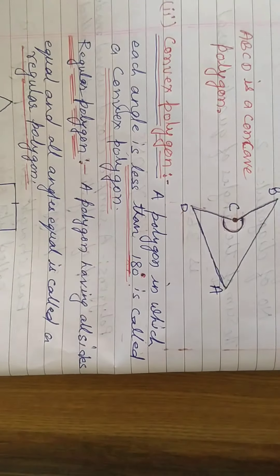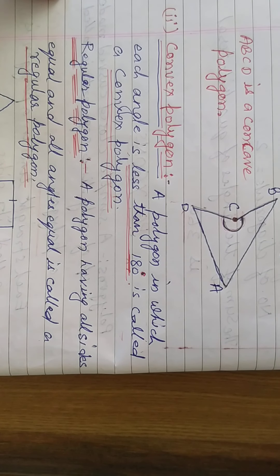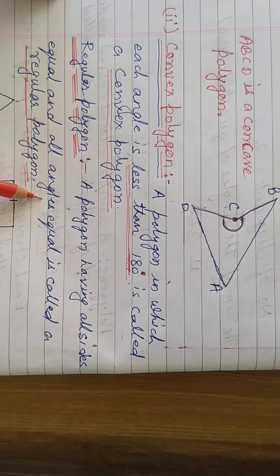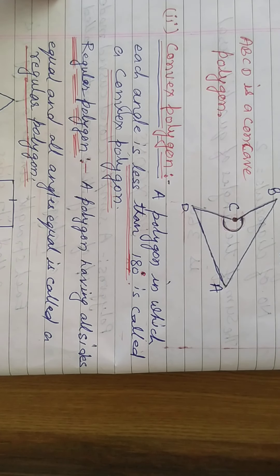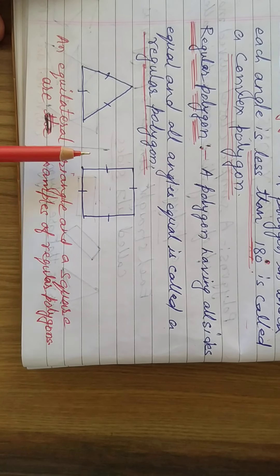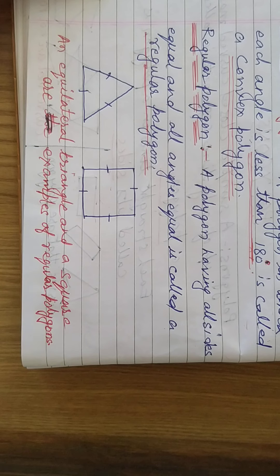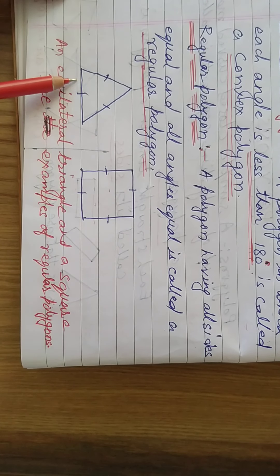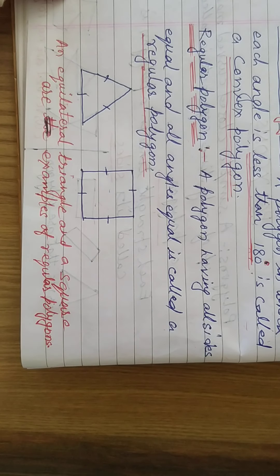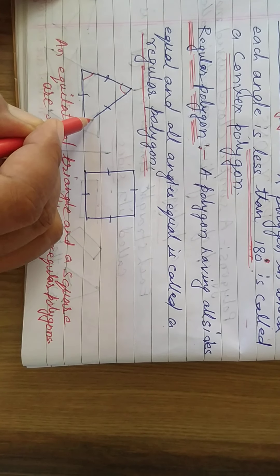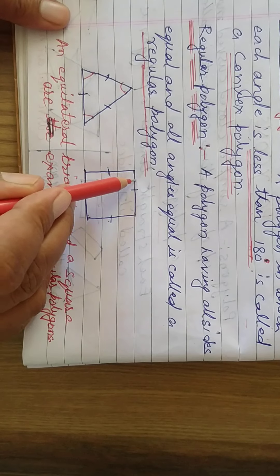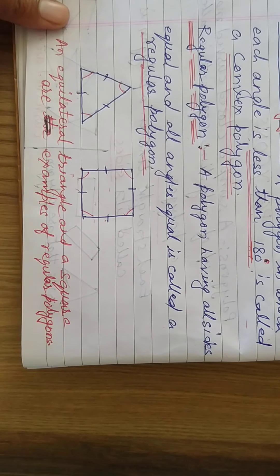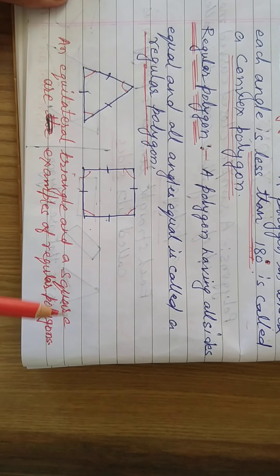Regular polygon: a polygon having all sides equal and all angles equal is called a regular polygon. For example, equilateral triangles and squares are examples of regular polygons — all sides are equal and all angles are equal.